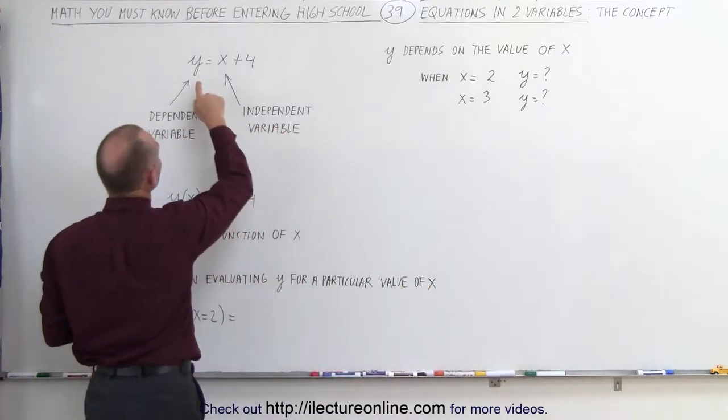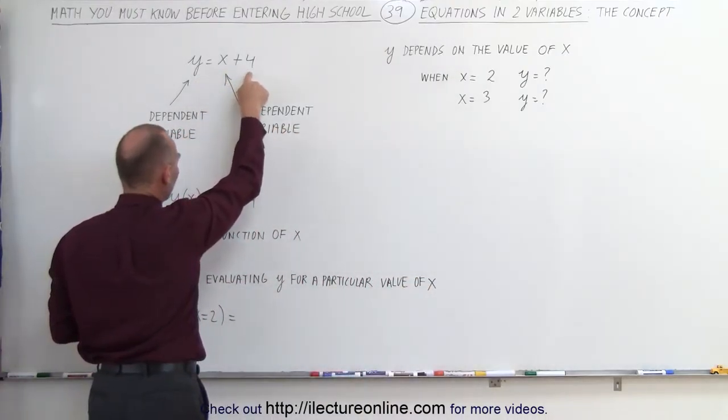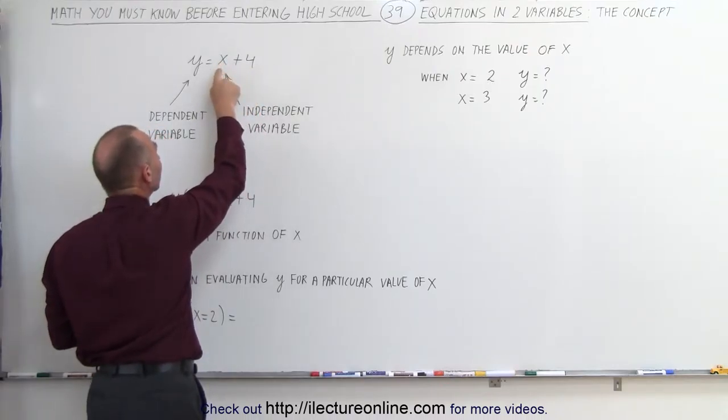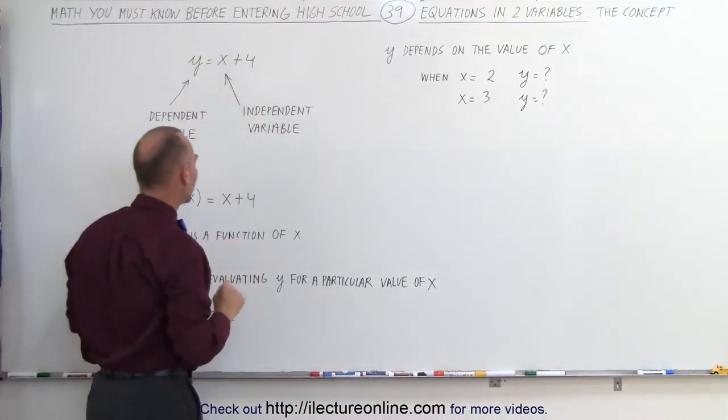So when we have an equation like this, y equals x plus 4, and we want to let x be a certain value, then we replace x by that value and then calculate what y is equal to.